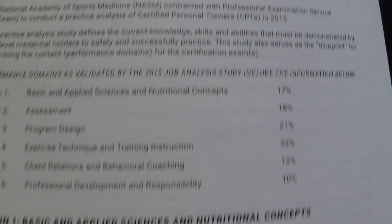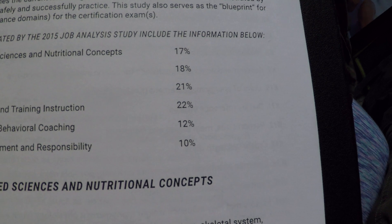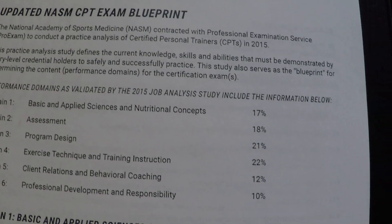The exam blueprint shows there's not much on basic and applied sciences and nutritional concepts - most of it is program design, exercise technique, and identifying overactive and underactive muscles. Know the number of sets, reps, and rest time for each stage of the OPT model. Also know ATP production and the different energy systems.